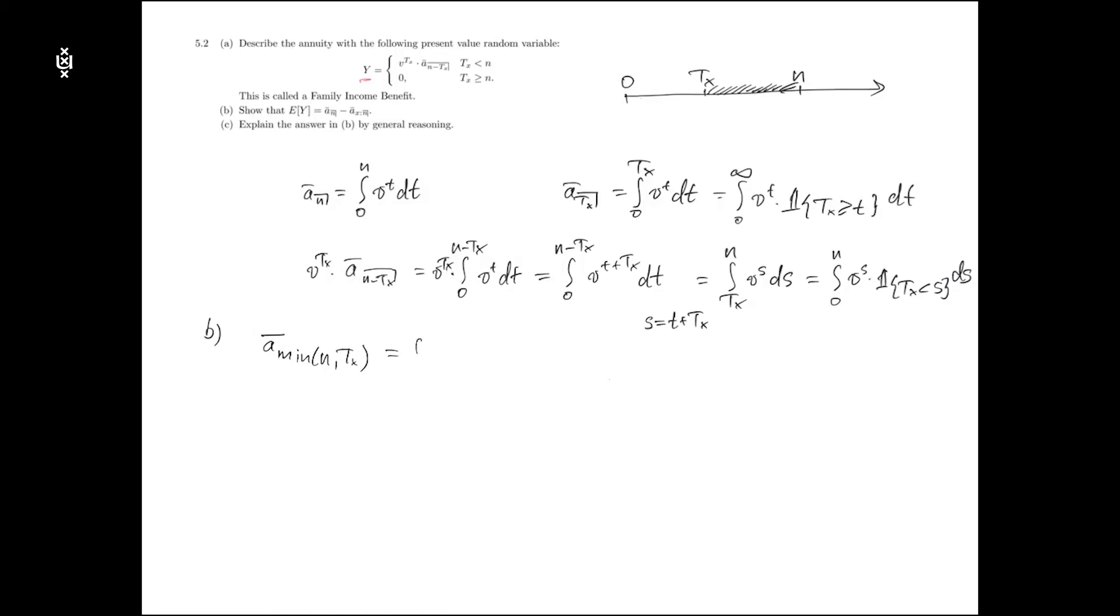So it can also be written as an integral from 0 to min of n, Tx v^t dt. And we could also write it using an indicator function as an integral from 0 to n v^t times indicator Tx greater than t dt.